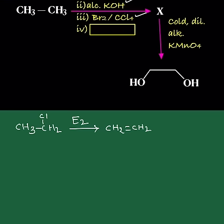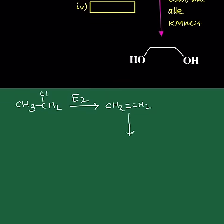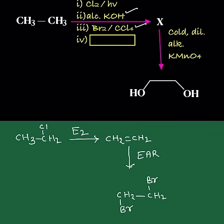Next that is treated with bromine CCL4, solvent is CCL4 not water. That is electrophilic addition reaction that proceeds through three membered cyclic halonium ion intermediate. Stereospecific reaction, that is anti addition, vicinal dibromide, 1,2 dibromo ethane.